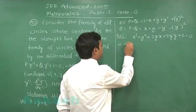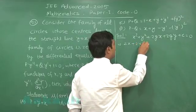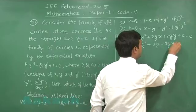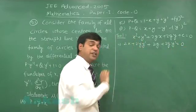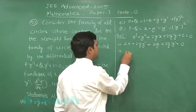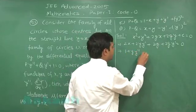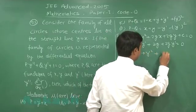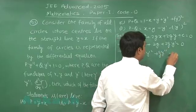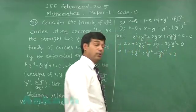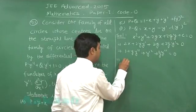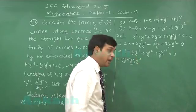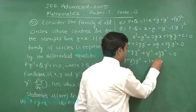Differentiating this equation we have 2x + 2y·(dy/dx) + 2g + 2g·(dy/dx) = 0. Differentiating again we get 1 + y·(d²y/dx²) + (y')² + g·(d²y/dx²) = 0. From here I observe g + y as the coefficient for the second derivative of y, and the two terms 1 + (y')².